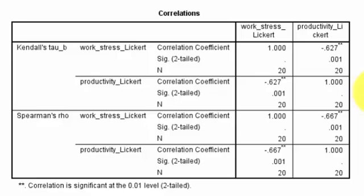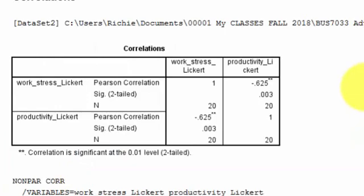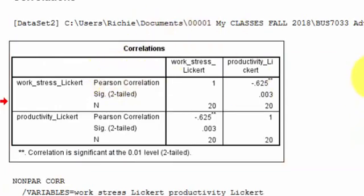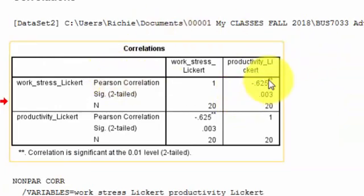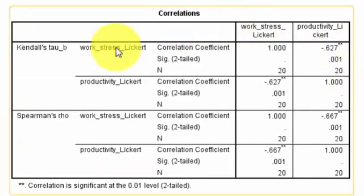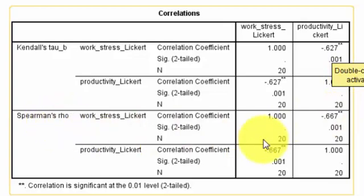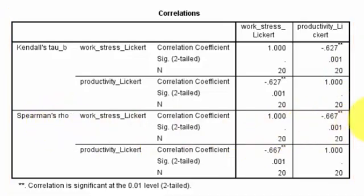There's the regular Pearson's correlation and you basically get the same answer. The numbers are a little bit different, you'll notice. The Pearson's correlation is negative 0.625, the Kendall's tau is negative 0.627, and the Spearman's rho is the nicest — it gives you the largest correlation at negative 0.667. But that's it.